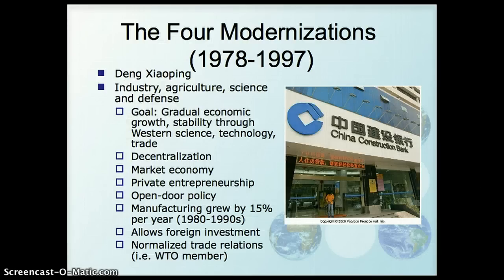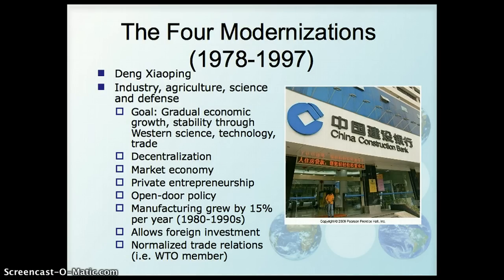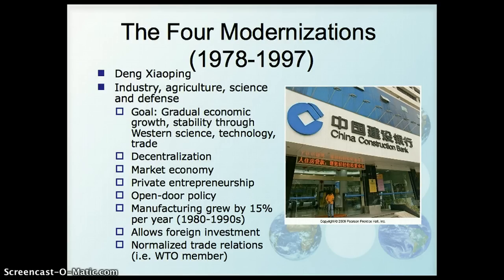Modern development in China can really be linked to the late 1970s when Deng Xiaoping was the leader. The idea was to use what was called the four modernizations — industry, agriculture, science, and defense — and focus on these as a way to gradually grow the economy using Western science, technology, and trade. There was a decentralization of planning. China is a communist country that had central planning and a command economy, but under Deng Xiaoping there was decentralization, a switch to a market-based economy, the encouragement of private entrepreneurship, and an open-door policy to outside investment. You see huge growth — manufacturing growing by 15% a year through the 80s and 90s.